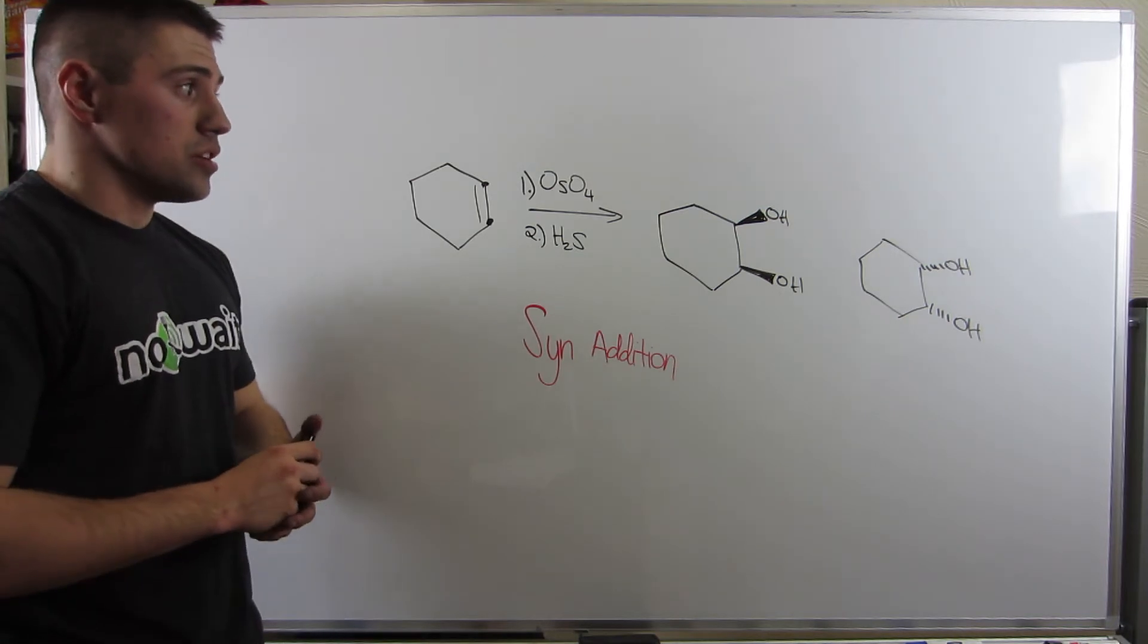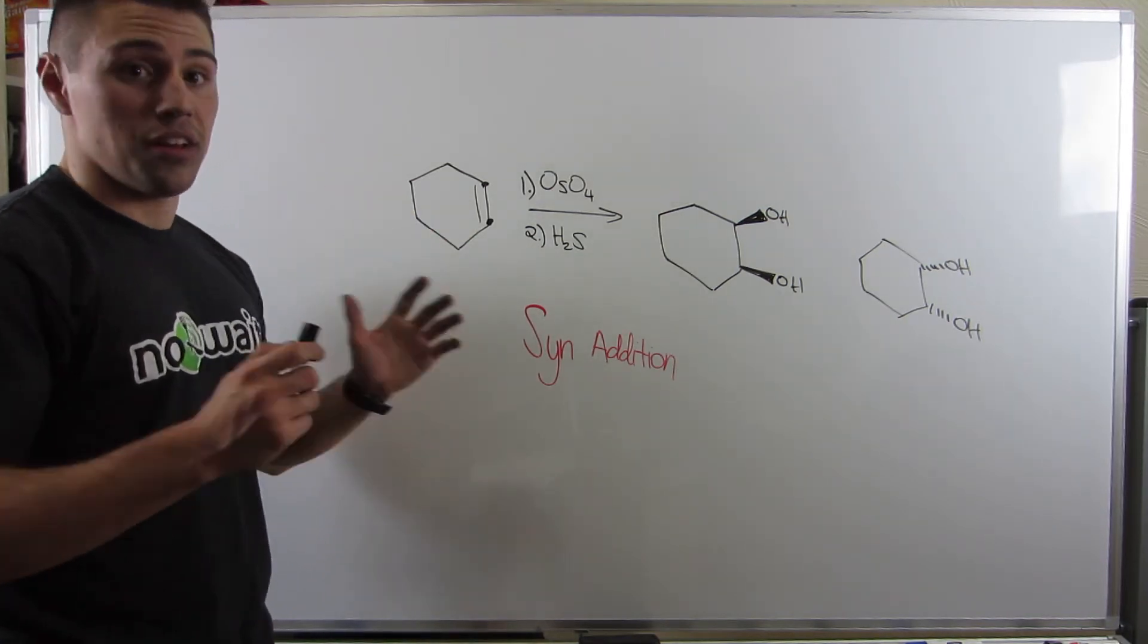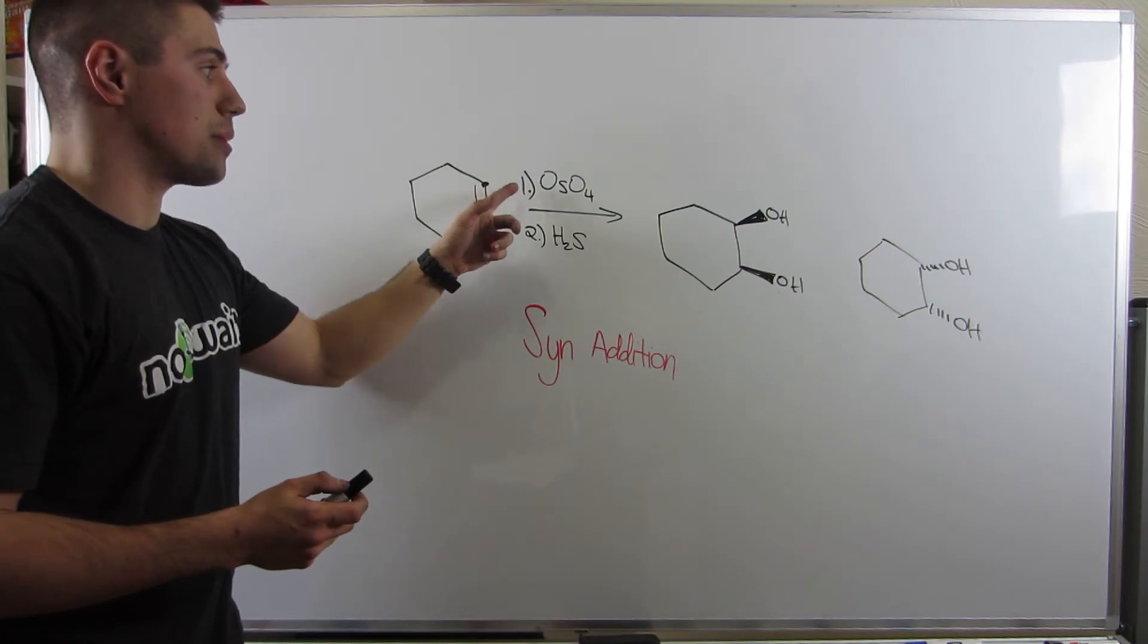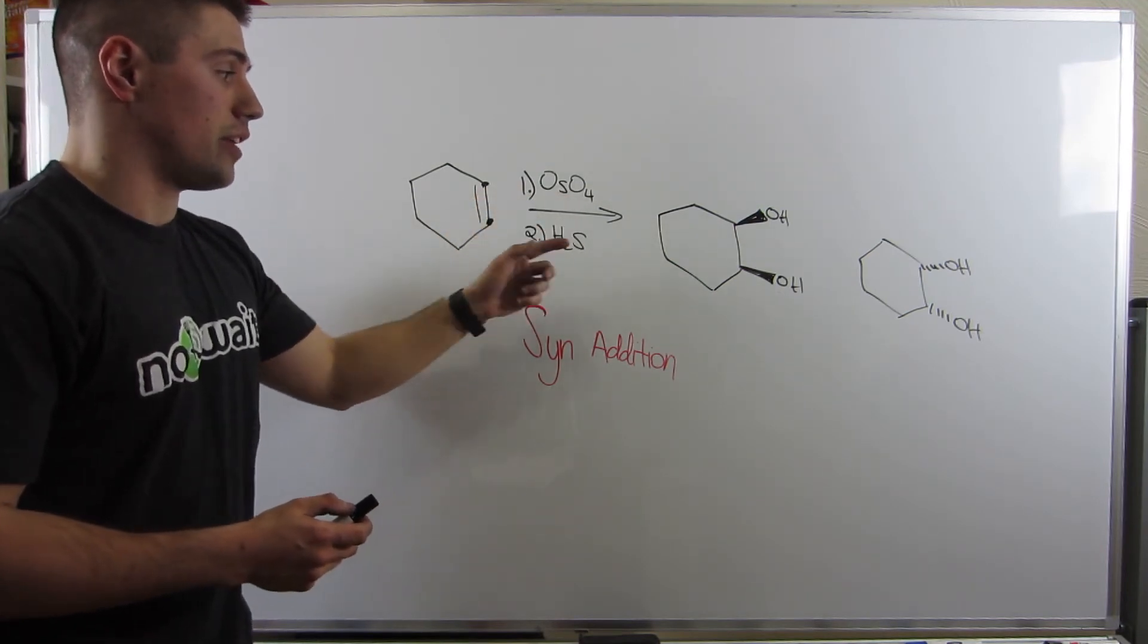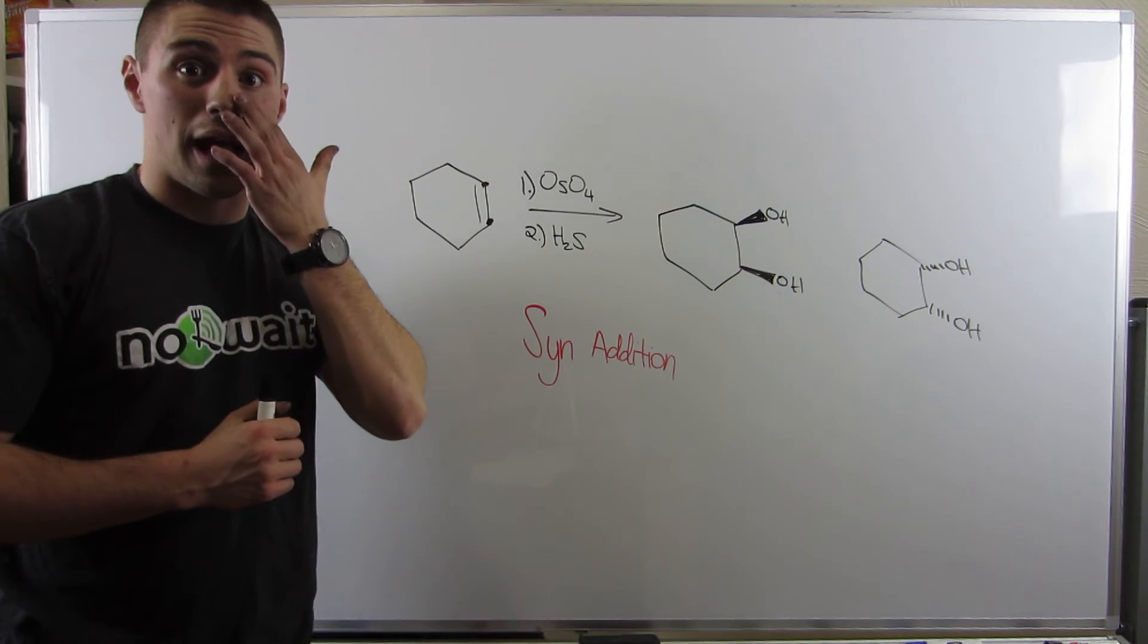Okay, so that is osmium tetroxide in a nutshell. Just remember first step of OsO4, second step of H2S. We have one more reaction to do in this chapter, and it's called ozonolysis.